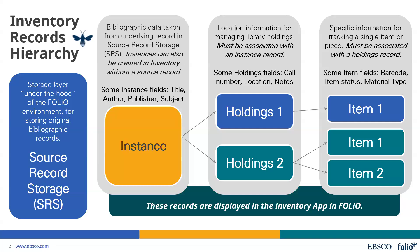Does anyone have any questions about this record hierarchy before I move on to the actual cataloging part of the session? Not seeing anything in the chat or Q&A — thank you.